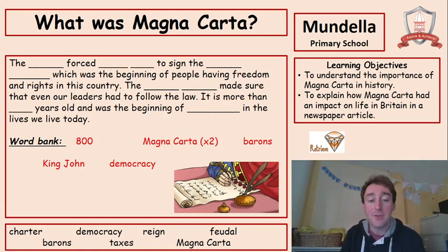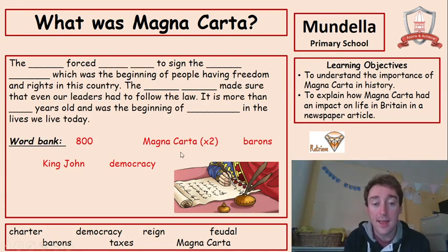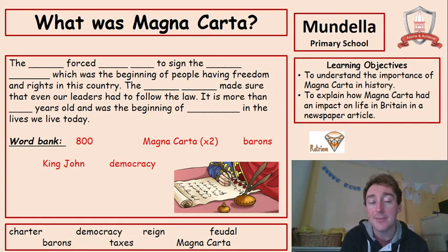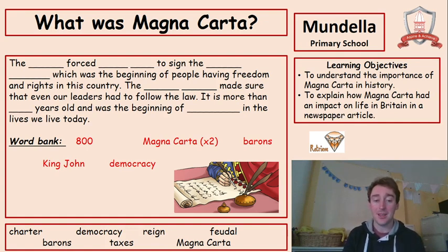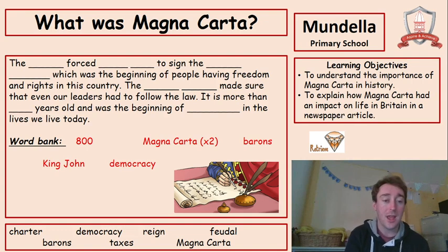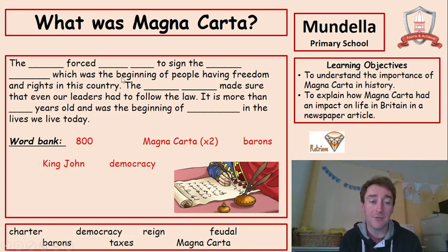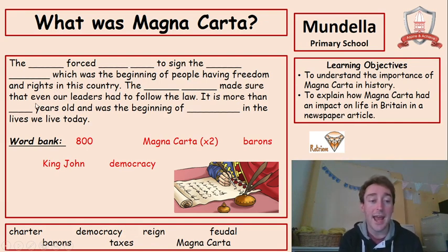Now we have a gap fill. If it says 'times two' by Magna Carta, that means you can use it twice. Pause the video now and see if you can fill in those gaps and write out this block of text with the gaps filled in your books. The answers are: the barons forced King John to sign the Magna Carta, which was the beginning of people having freedom and rights in this country. The Magna Carta made sure that even our leaders had to follow the law. It is more than 800 years old, and was the beginning of democracy in the lives we live today. Make any changes you need to.